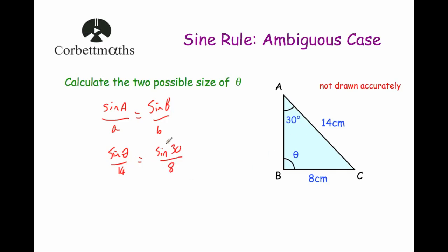So we're now going to work out what this is. Working out what sine 30 divided by 8 is, so sine theta over 14 equals, and on my calculator, that would give me 0.0625. Multiplying both sides of this equation by 14 gives us sine theta equals 0.875.